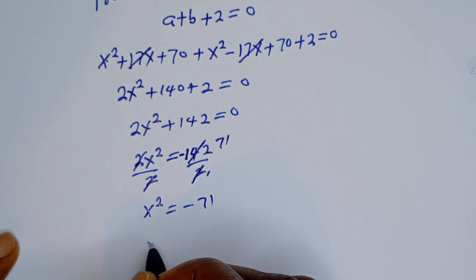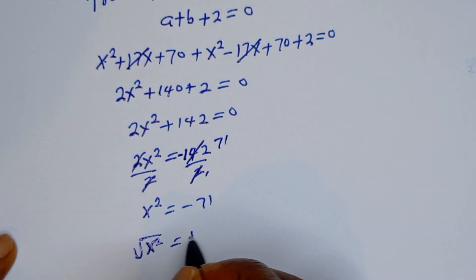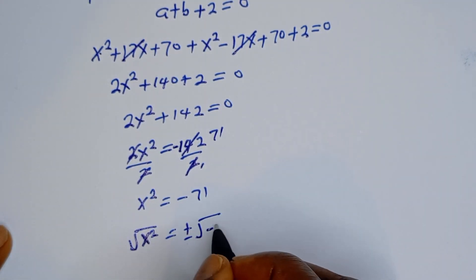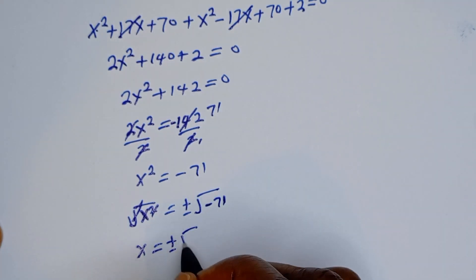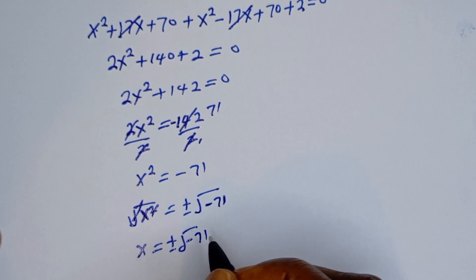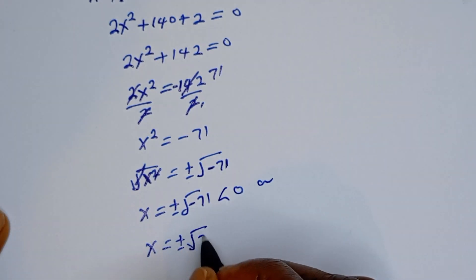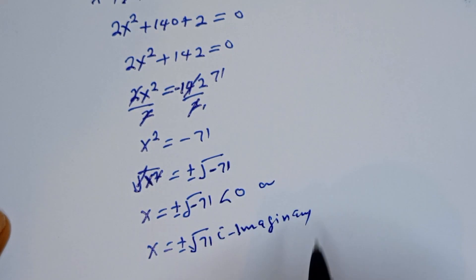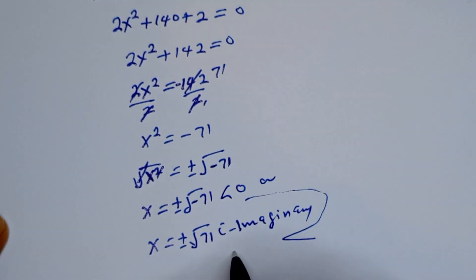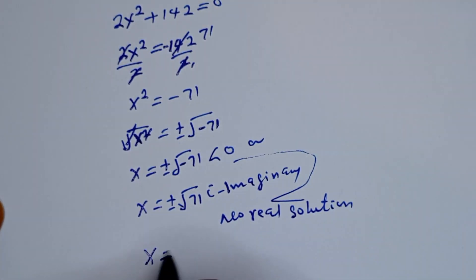Taking the square root of both sides, S equals plus or minus the square root of minus 71, which equals plus or minus the square root of 71 times i, which is imaginary. Therefore there is no real solution from this case. The only real solution is S equals 0.